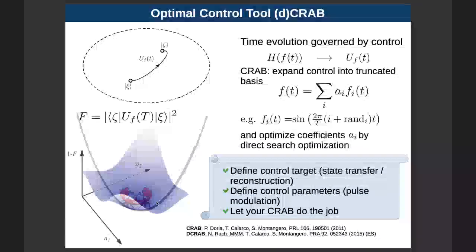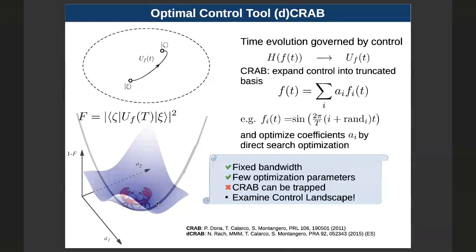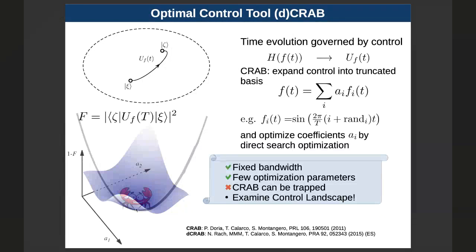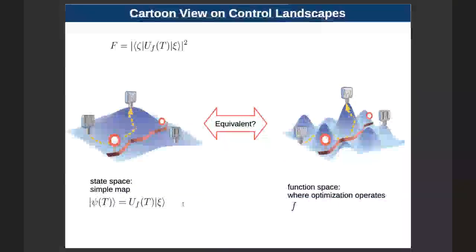In the second part I'll predominantly talk about control with noise and a recent publication we did on this, and finally make some advertisement for our control software. Now if you want a very simple control problem, that's probably the state transformation. The idea is that you start with a certain initial state, and you want to arrive at the target state. You have some time evolution that defines your trajectory, and this time evolution depends on the control field, typically via the Hamiltonian.